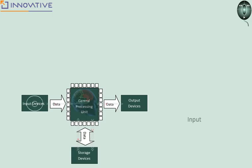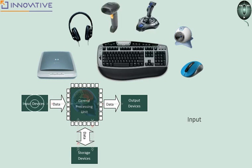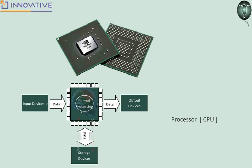At the extreme left of the block diagram is the input unit. The keyboard, mouse, scanner, webcam, and mic are a few examples of input devices through which we put data into the computer. The next one in the middle is called the processor, which primarily processes the data received from the input devices, so it's called the processing unit — handled by the central processing unit, or CPU.